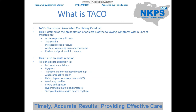What's TACO? TACO is Transfusion Associated Circulatory Overload and it is related to fluid overload. It is defined as the presentation of at least four of the following five symptoms within six hours of transfusion: acute respiratory distress, tachycardia, increased blood pressure, acute or worsening pulmonary oedema, and evidence of positive fluid balance. Its clinical presentation includes left ventricular failure, dyspnoea, tachypnoea — abnormal rapid breathing — a non-productive cough, raised jugular venous pressure, basal lung crackles, frothy pink sputum, hypertension, and tachycardia.